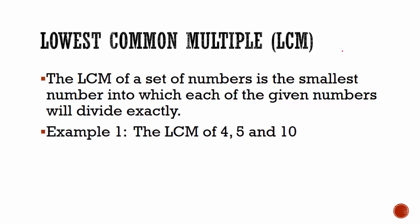Lowest Common Multiple or LCM. The LCM of a set of numbers is the smallest number into which each of the numbers given will divide exactly.